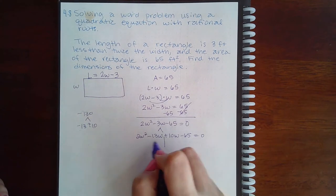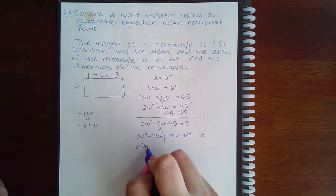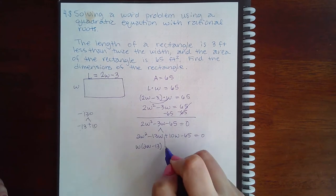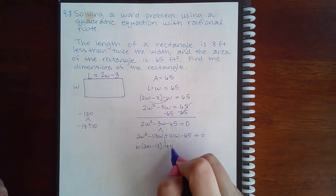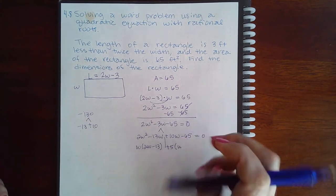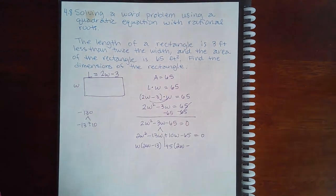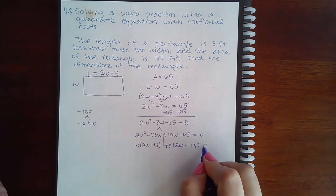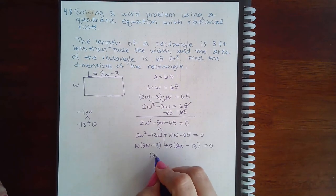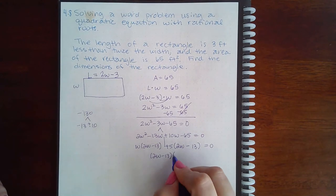I'm going to cut this in half. These have a w in common, put my plus sign. These can both be divided by 5, so I end up with 2w, and 65 divided by 5 is 13. These have a 2w minus 13 in common, leaving me with w plus 5.